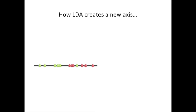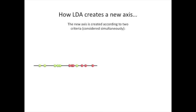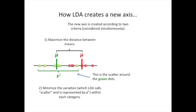How does LDA create the new axis? The new axis is created according to two criteria that are considered simultaneously. The first criteria is that once the data is projected onto the new axis, we want to maximize the distance between the two means. Here we have a green mu character, which is a Greek character representing the mean for the green category, and a red mu representing the mean for the red category. The second criteria is that we want to minimize the variation, which LDA calls scatter and is represented by S squared within each category. On the left side we see the scatter around the green dots. On the right side we see the scatter around the red dots.